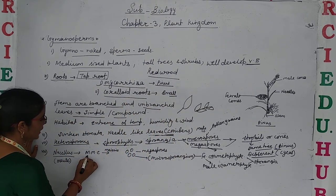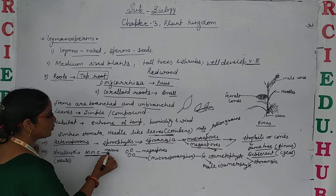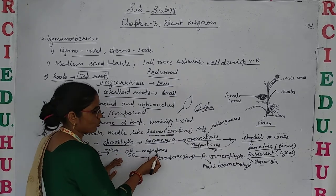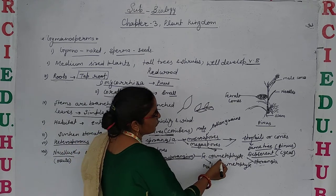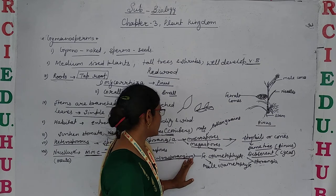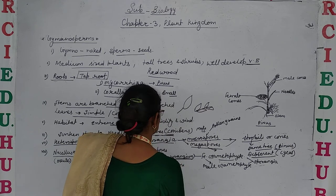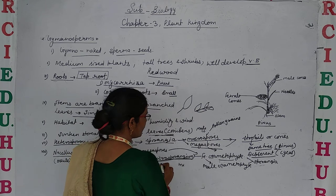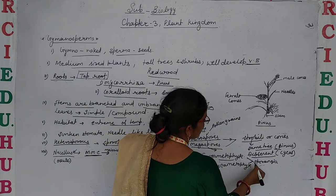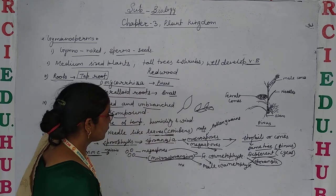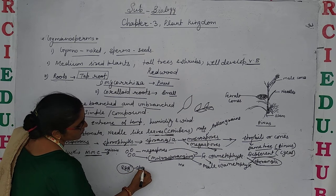The megaspore mother cell is differentiated from the nucellus. It undergoes meiotic division and produces four megaspores. Out of these, one megaspore present inside the microsporangium develops into the female gametophyte, while the microspore produces the male gametophyte. The megasporangium produces the female gametophyte and the microsporangium produces the male gametophyte. They reside inside the sporangium, where the male gametophyte contains pollen grains.